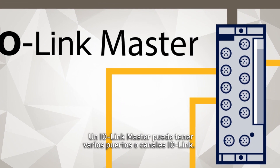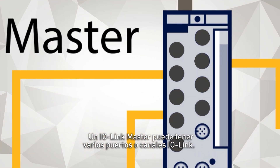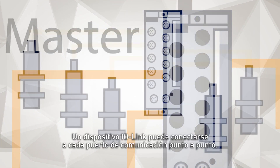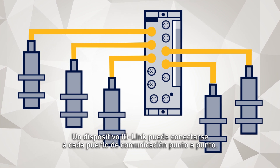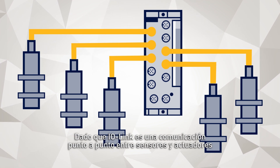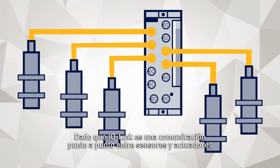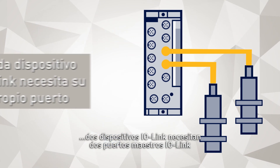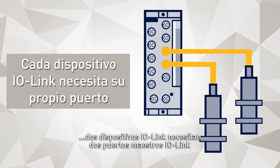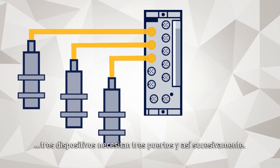An IO-Link Master can have several IO-Link ports or channels. An IO-Link device can be connected to each port in a point-to-point manner. Since IO-Link is point-to-point communication between sensors and actuators, two IO-Link devices need two IO-Link Master ports, three devices need three ports, and so on.